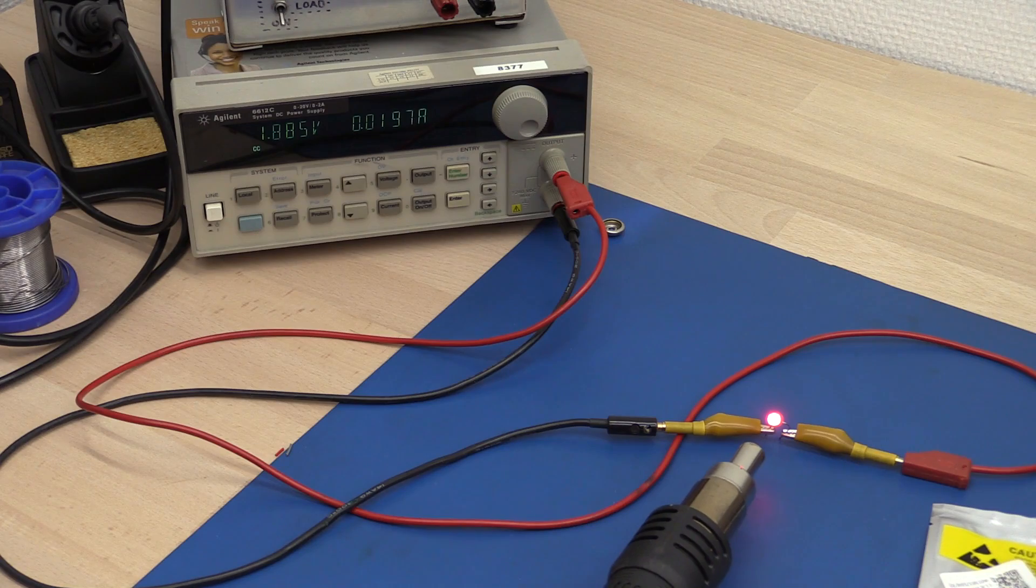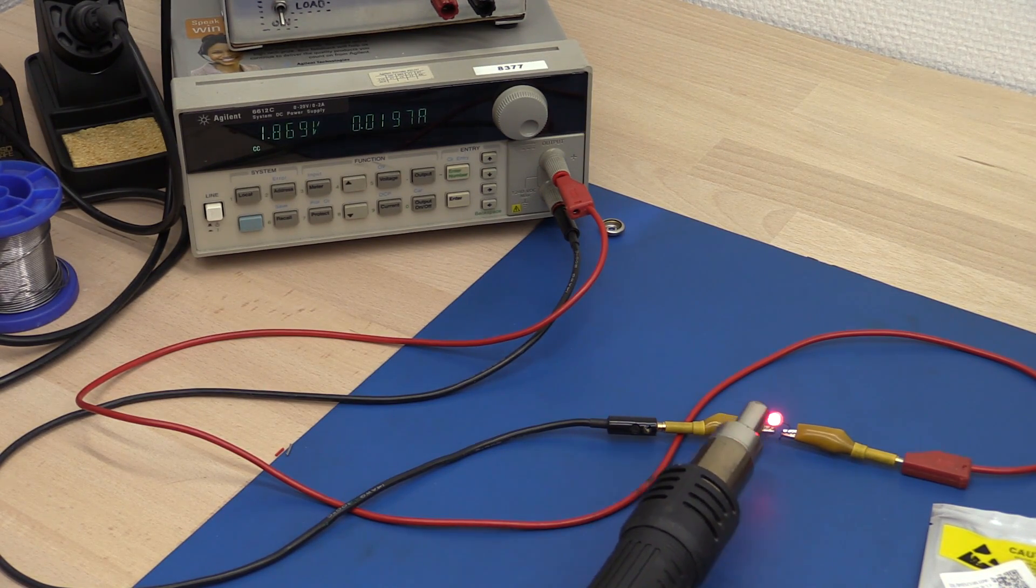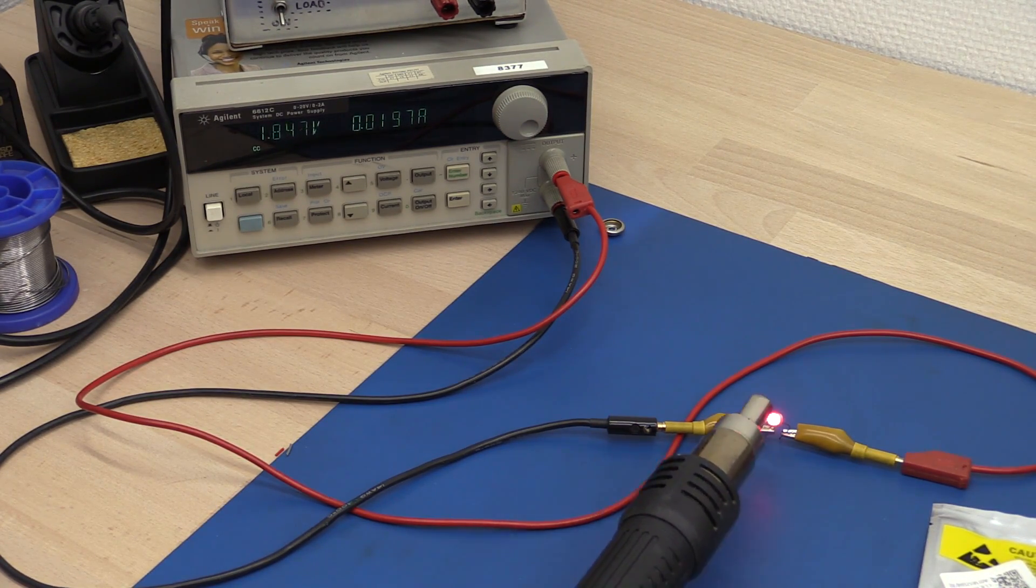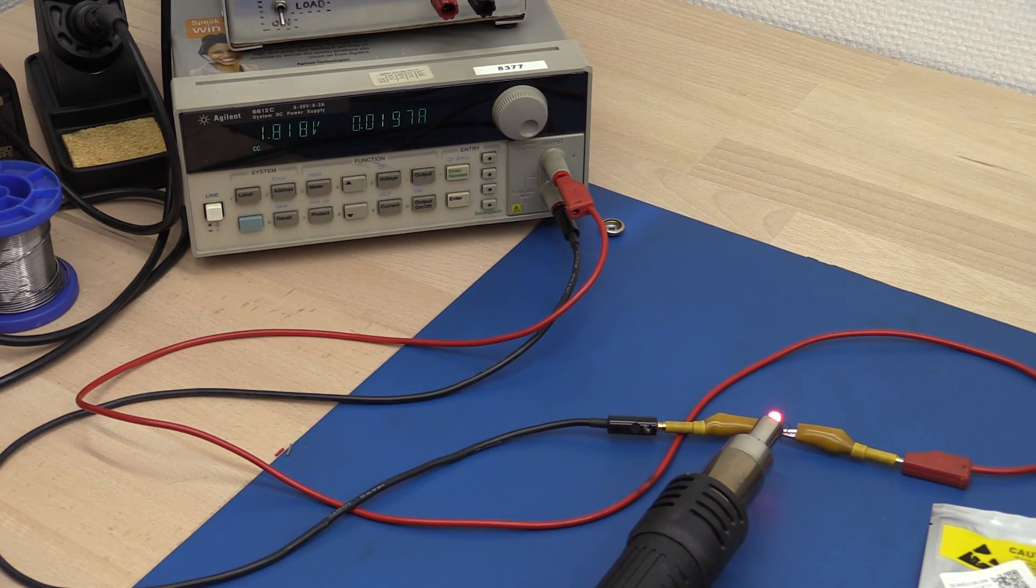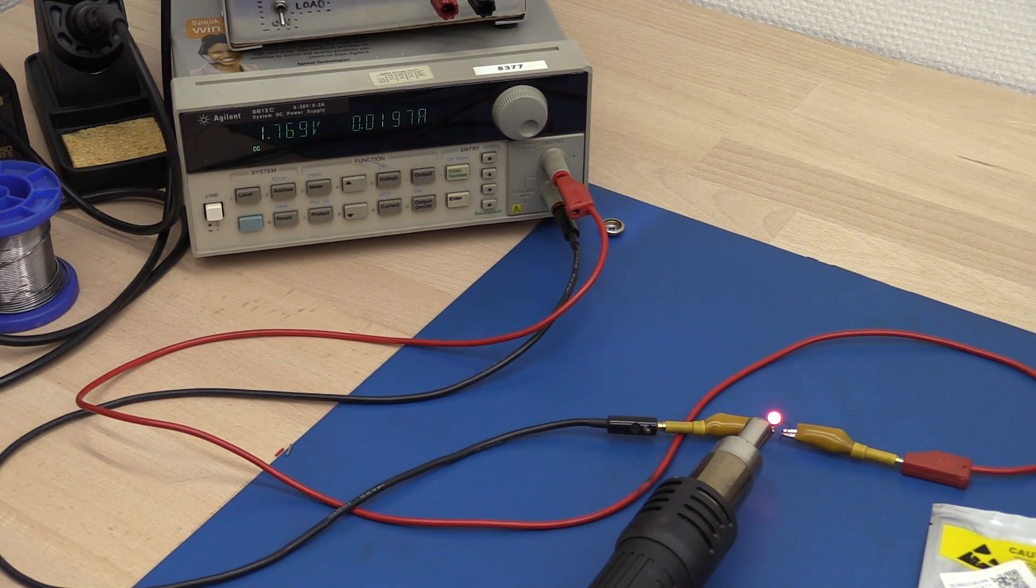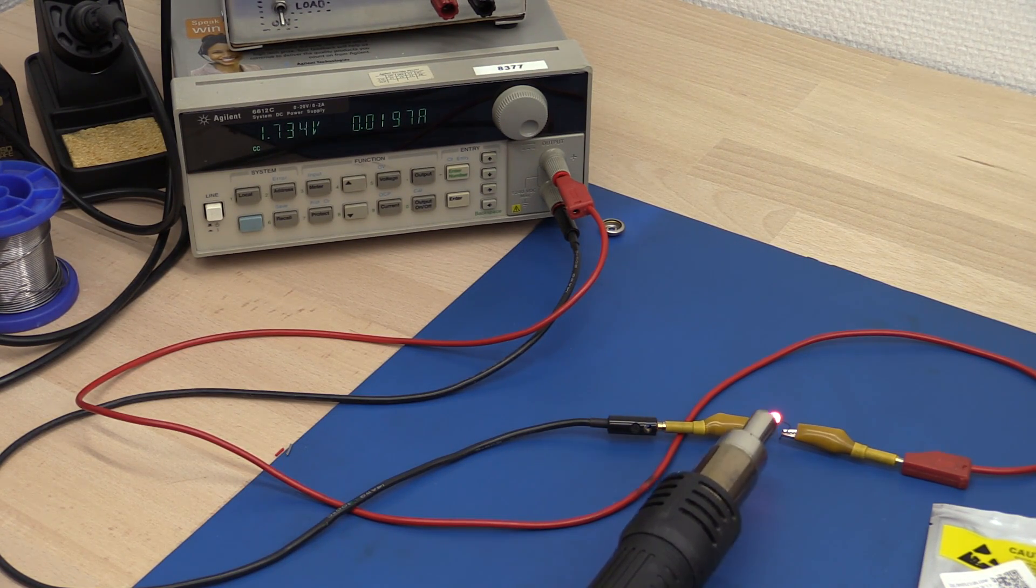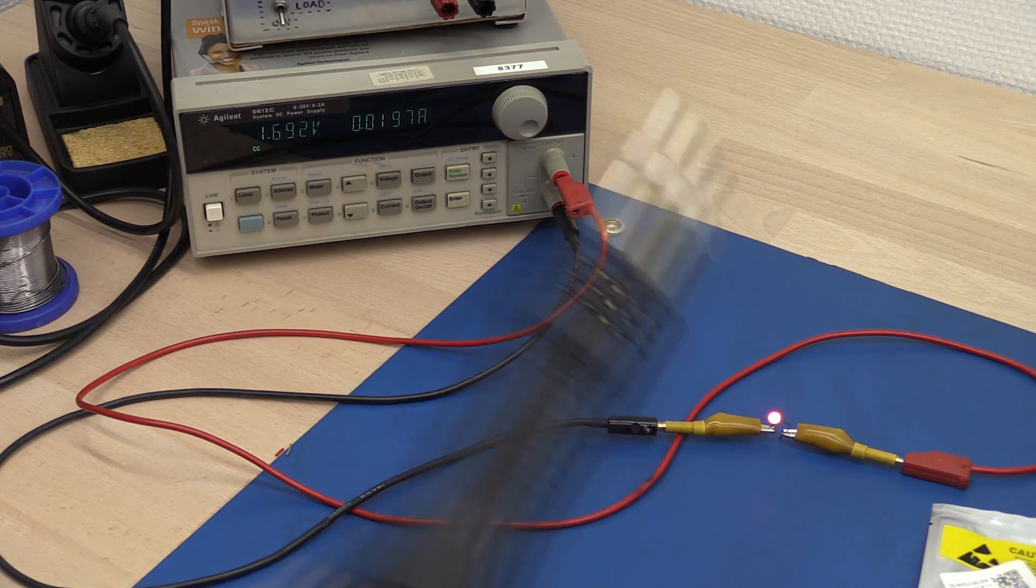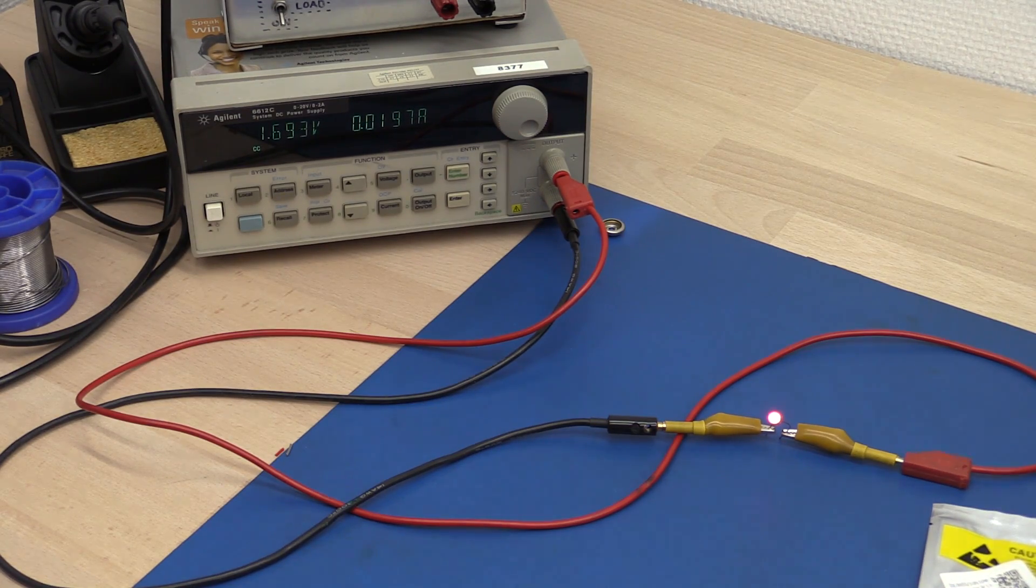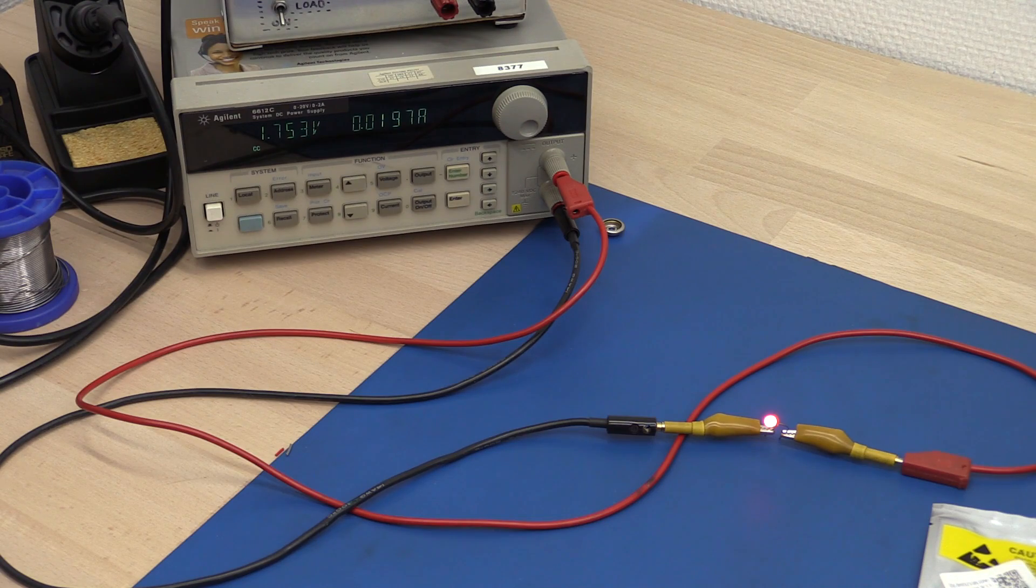You can see as we cool it to maintain 20 milliamps the forward voltage goes up to about 1.9. As we heat it up again at around room temperature we will get down to 1.8. And if we keep heating it we drop to around 1.7. And eventually this will go back to 1.8 volts unless I heated it too much.